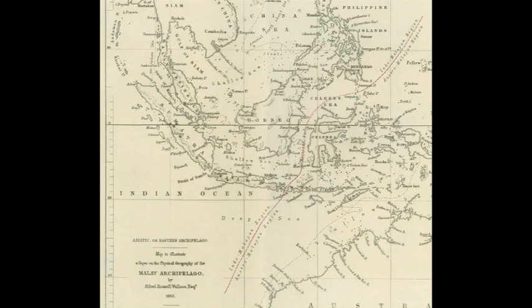Wallace noticed this clear division during his travels to the East Indies in the 19th century. The line runs through Indonesia, between Borneo and Sulawesi, and through the Lombok Strait between Bali and Lombok. The distance between Bali and Lombok is small, about 35 kilometers, or 22 miles.